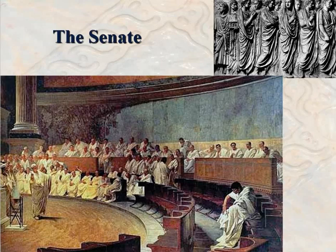Welcome back to part 2 of lecture 8 on ancient Rome. We were talking about in the prior video how the patrician class tended to dominate the three branches of the Roman Republican government.